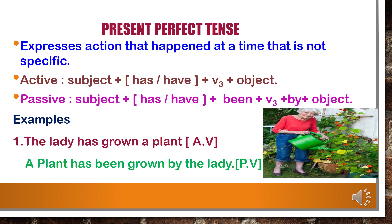'Waste papers' is the object in active voice and now becomes the subject in passive voice. 'Are' is the helping verb. 'Being' plays a very important role in passive voice. 'Burnt' is the V3, the third form of the verb. 'By' comes before the object. 'The boys' is the subject in active voice and now changes to the object in passive voice. In present perfect tense, the active voice formula is: subject plus has/have plus V3 plus object. In passive voice: subject plus has/have plus being plus V3 plus by plus object.